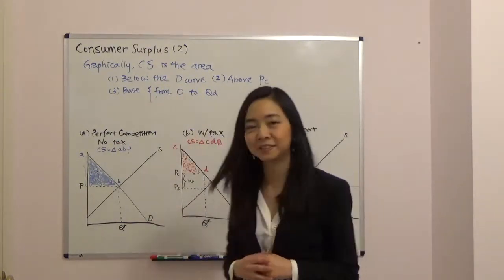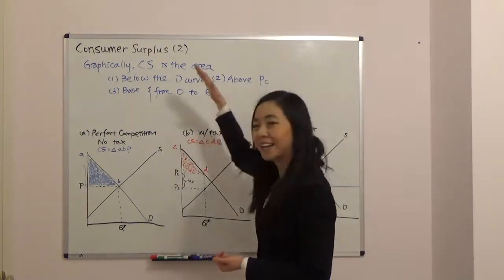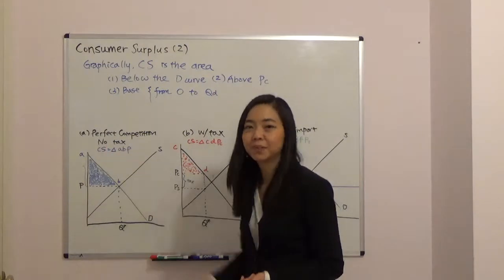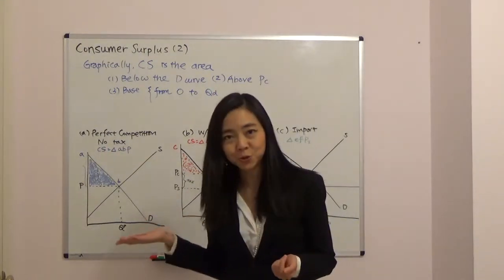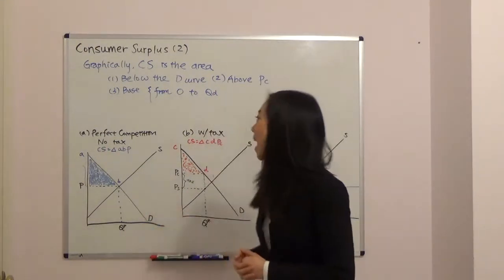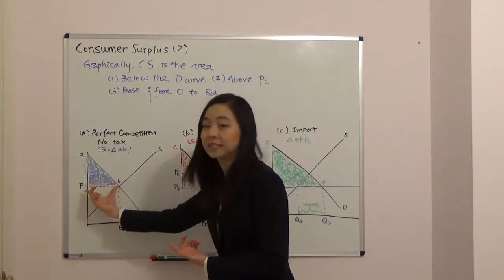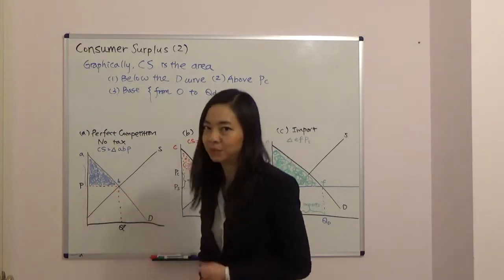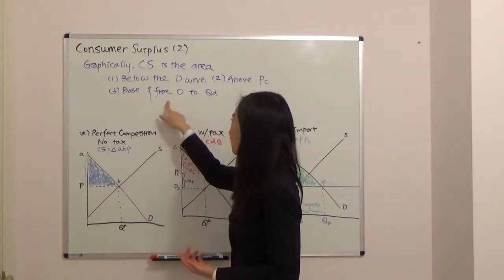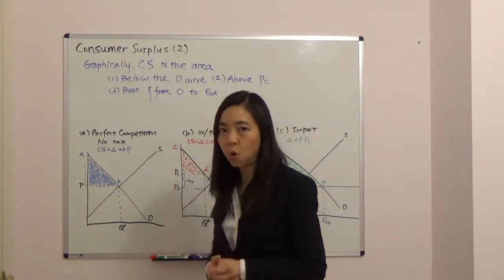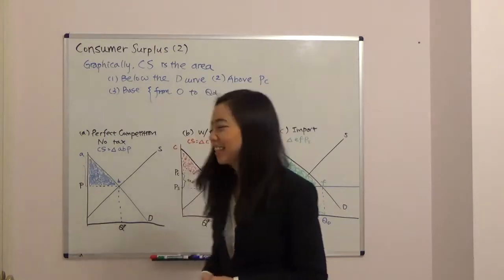Graphically, consumer surplus is the area below the demand curve, above the price paid by the consumer. The base of the shape — usually it's a triangle, sometimes it's a trapezoid — will be from zero to the quantity demanded in the market.